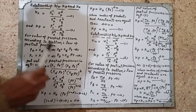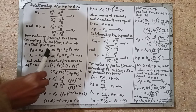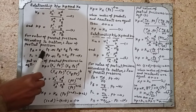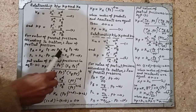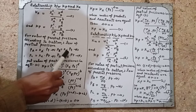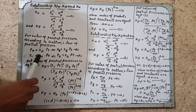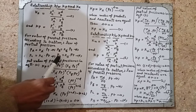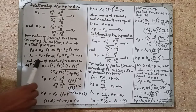We have already studied Dalton's law of partial pressure: partial pressure equals mole fraction multiplied by total pressure. So partial pressure of gas A equals mole fraction of gas A multiplied by total pressure. Partial pressure of gas B equals mole fraction of gas B multiplied by total pressure. Partial pressure of gas C equals mole fraction of gas C multiplied by total pressure. Partial pressure of gas D equals mole fraction of gas D multiplied by total pressure.